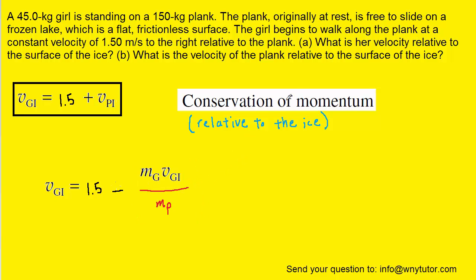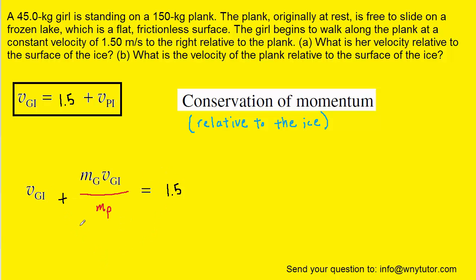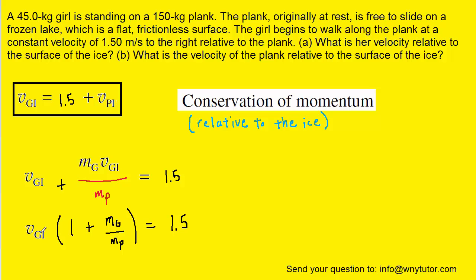Let's take stock of where we are. Part A is asking for the girl's velocity relative to the surface of the ice, so we are solving for v gi, which appears on both sides of the equation. We add the fraction over to the left side so that both v gi terms are together, and then factor out v gi. If we redistributed v gi, v gi times one is v gi, and v gi times m g over m p gives v gi times m g over m p — so this factoring is correct.